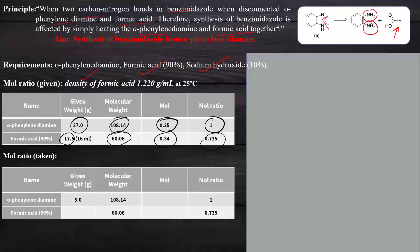So from that we get the mole of the taken amount. If you want to find out the mole of ortho-phenylenediamine when you have 5 grams, divide weight by molecular weight, and we get moles of about 0.046.